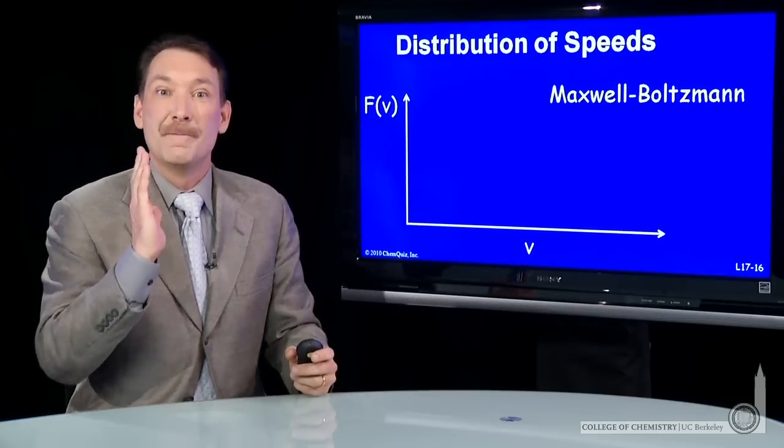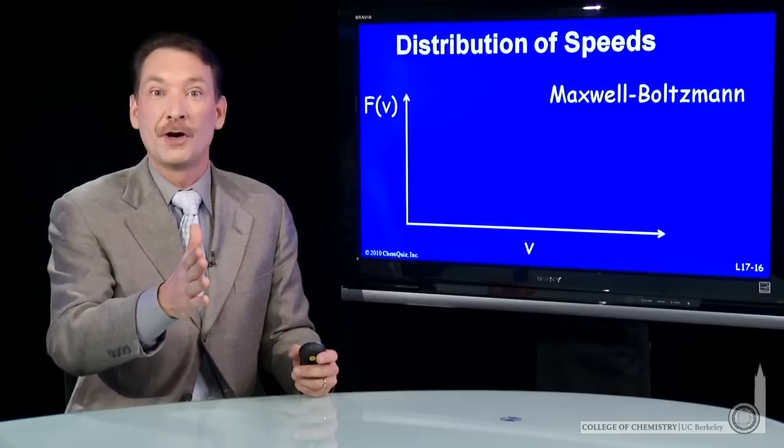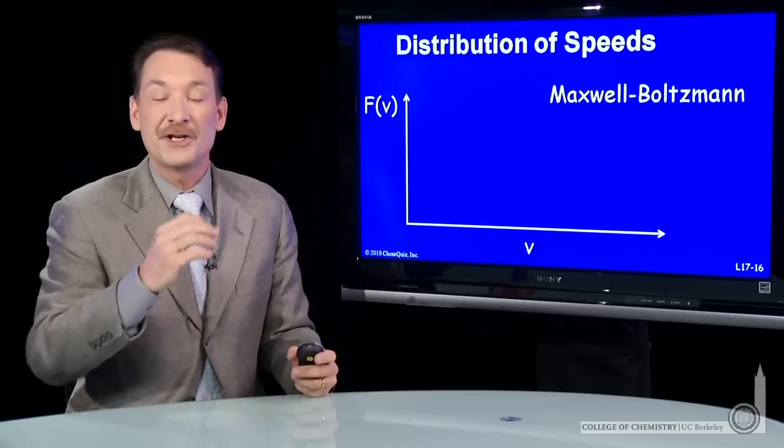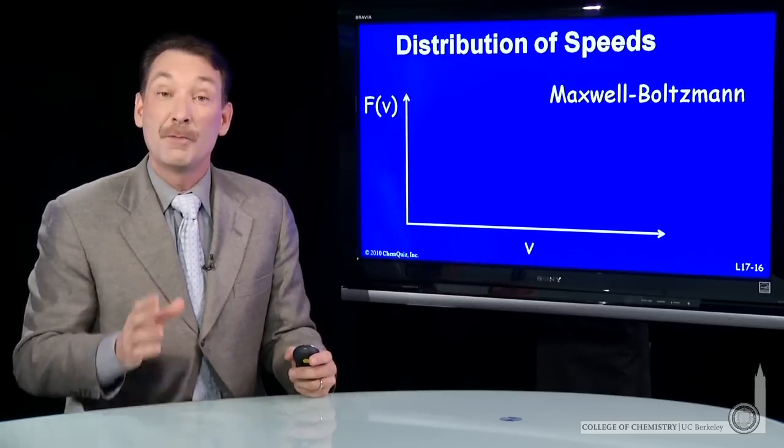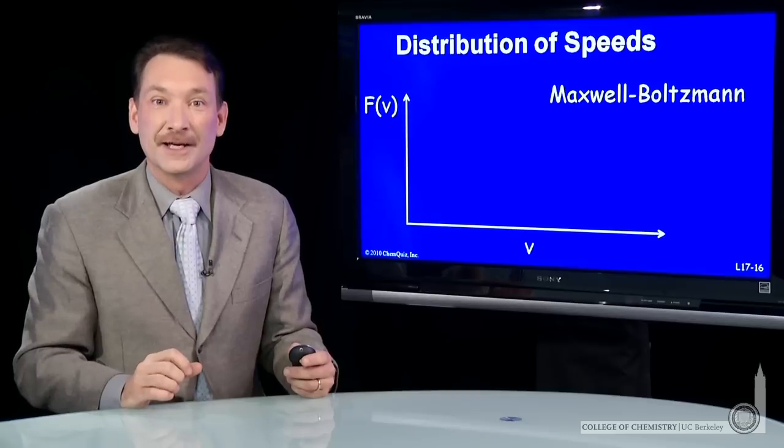Now, we used the mean squared velocity in our expressions for the kinetic energy and the pressure in a sample of gas. But what does that distribution of speeds look like?